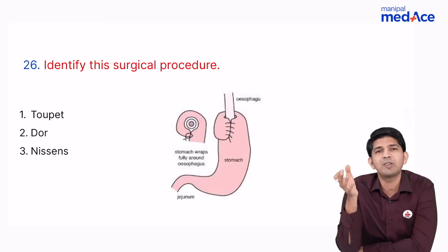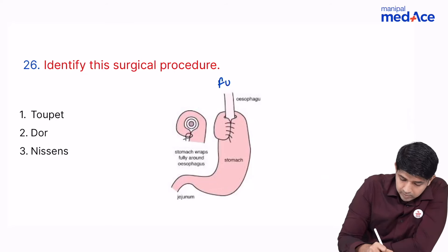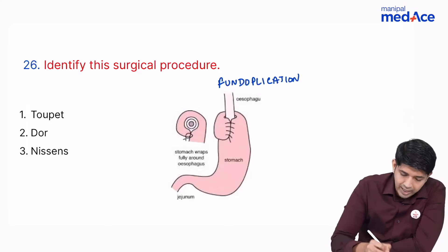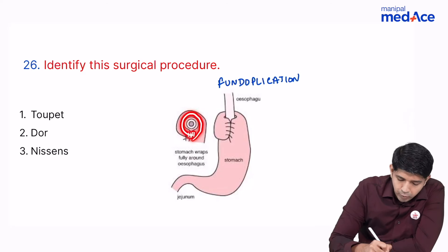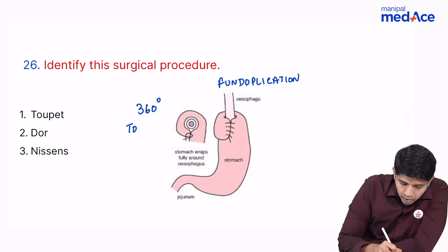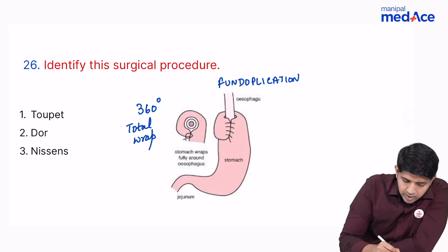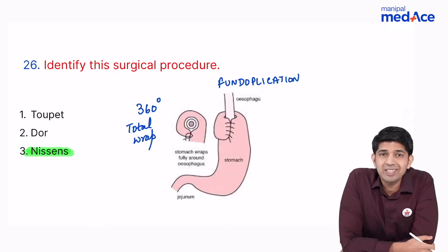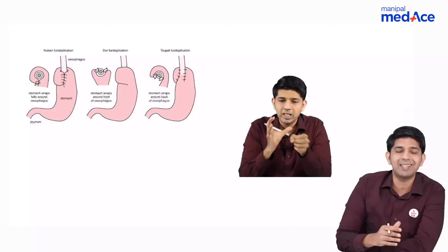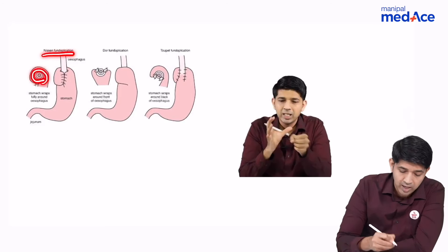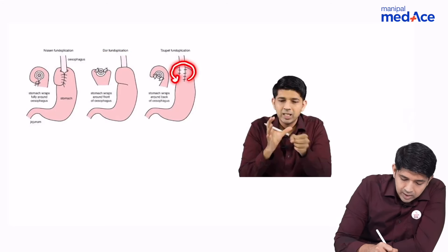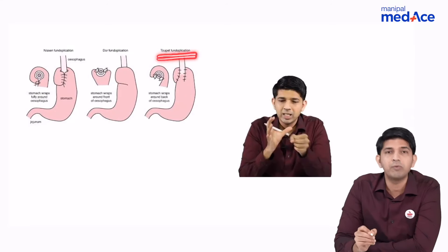An image showed a patient who had undergone fundoplication. The question asked to identify the type. A 360-degree total wrap is Nissen's fundoplication. An anterior partial wrap is the Dor fundoplication. A posterior partial wrap is the Toupet fundoplication. The image appeared to show a complete 360-degree wrap — the answer is Nissen's fundoplication.